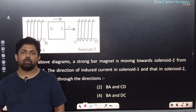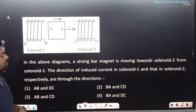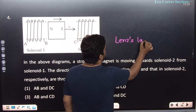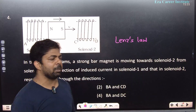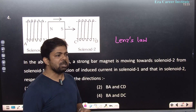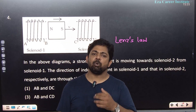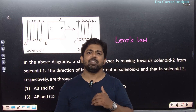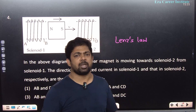Question number 4 is about basic concept — Lenz's law. Lenz's law states that if a current is induced in a circuit, it will be induced in such a direction that its magnetic field will oppose the effect that caused it.